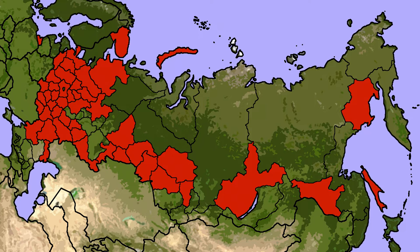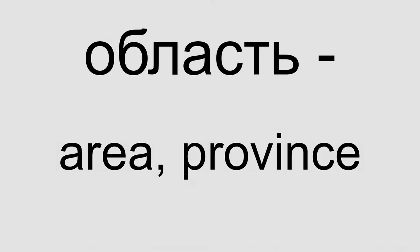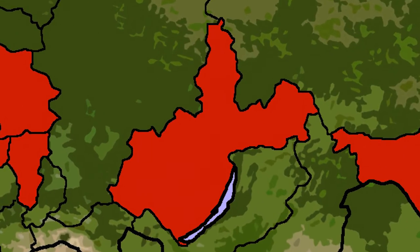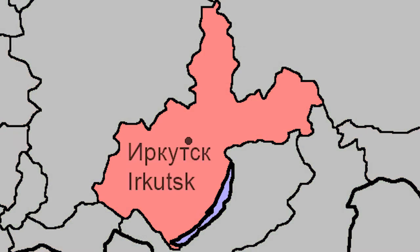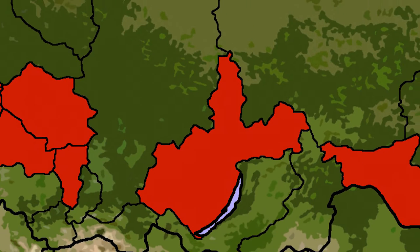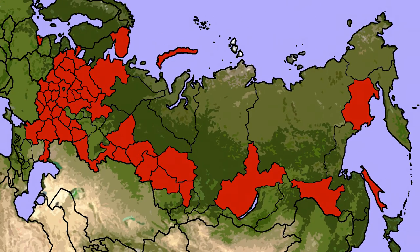The first kind of federal subject I'll discuss is the most common: the oblast. The word oblast most nearly means 'area' or 'province' in English, so they're the pretty standard run-of-the-mill subdivisions most of us know and love. The naming of the oblast usually has to do with the administrative center, or capital of the oblast, which also is usually the largest city. However, a few exceptions do exist, most notably in Leningrad and Moscow Oblast.